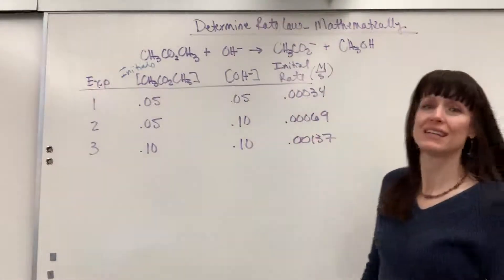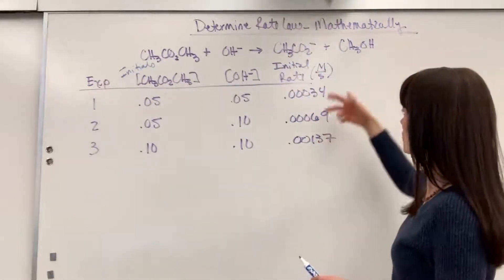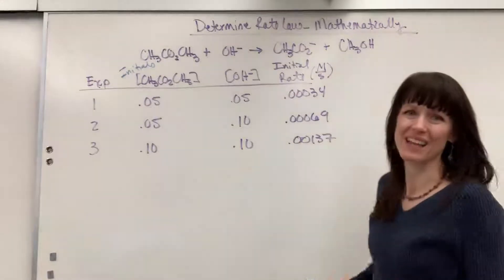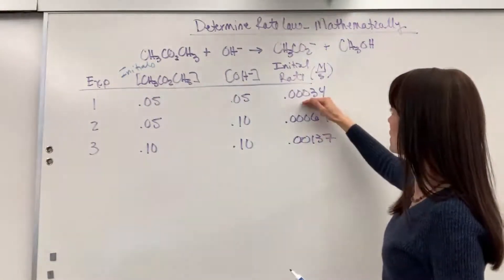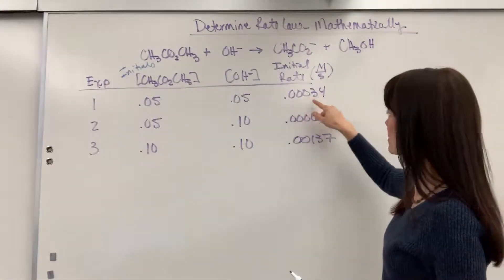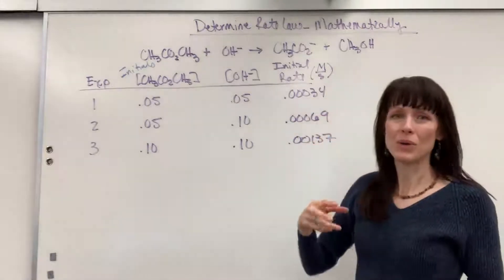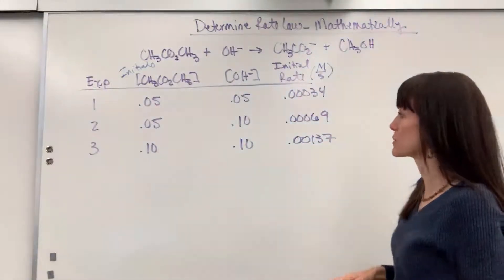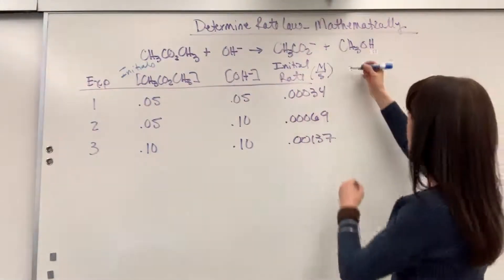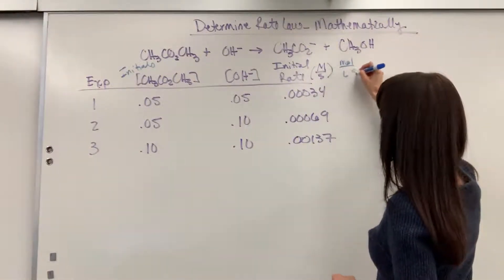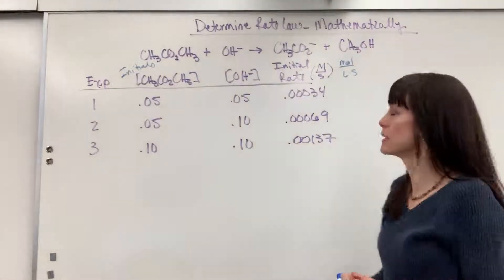This right here is our initial rate. That's going to be the initial rate. And the unit on this is molarity per second. So that tells us that this is being consumed at 0.00034 molar per second, moles per liter per second. And remember, that could have been written mole per liter times second. Same thing.